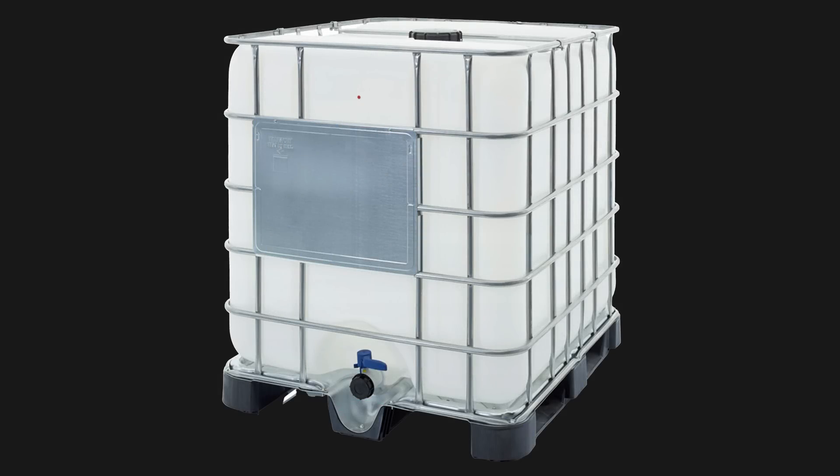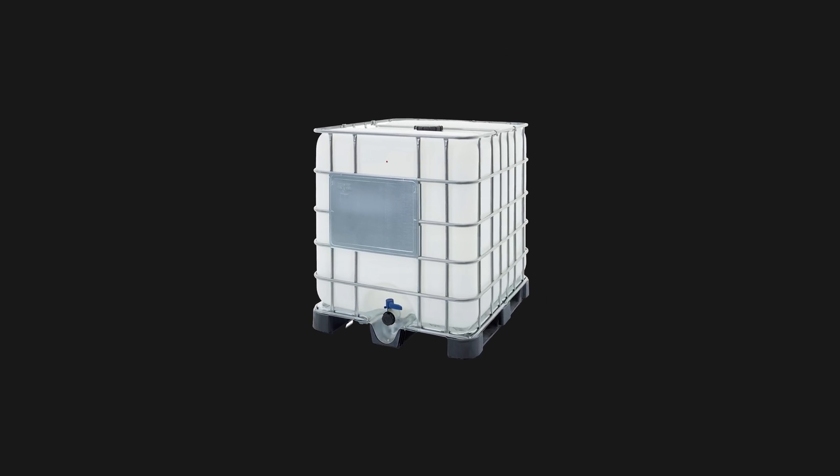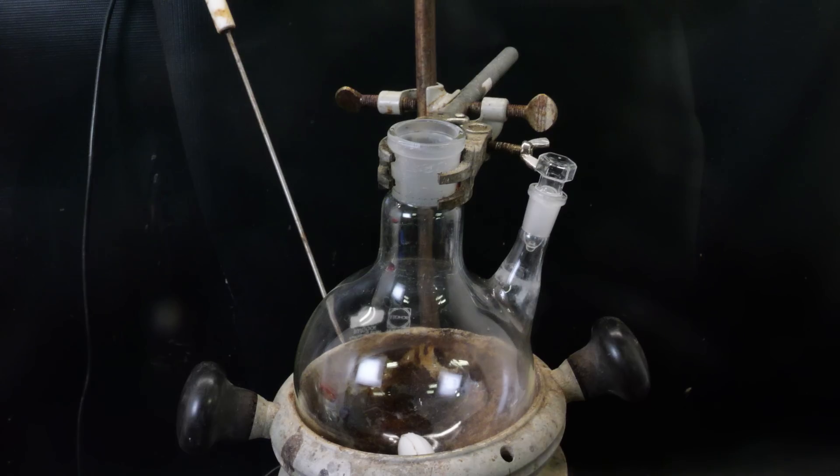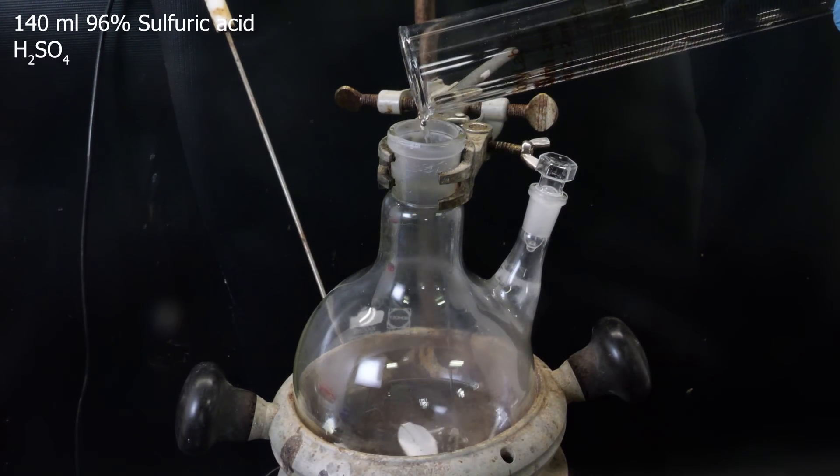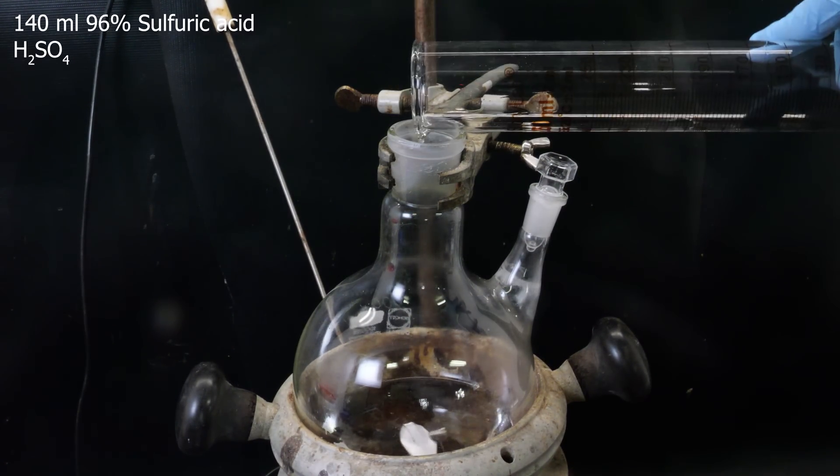I don't need a huge amount, so I'm going to see if I can get away with being a little bit lazy. So I set up a flask in a heating mantle and add in 140 ml of 96% sulfuric acid.